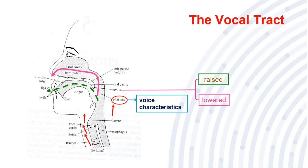If you're curious whether this is true, you can say the nasal sounds like 'm' or 'n' while putting your hand in front of your mouth and nose and see where the air comes out. The vocal tract will help us in producing speech sounds.